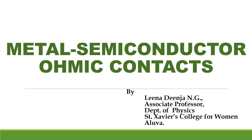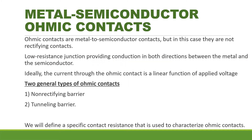Hi everyone. Through this class we are going to study about metal-semiconductor ohmic contacts. Ohmic contacts are metal-to-semiconductor contacts, but in this case they are not rectifying contacts. An ohmic contact is a low-resistance junction providing conduction in both directions between metal and the semiconductor. The current through the ohmic contact is a linear function of applied voltage, and the applied voltage should be very small. Two general types of ohmic contacts are possible: non-rectifying barrier and tunneling barrier.